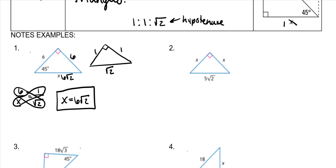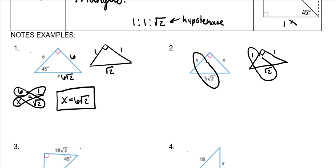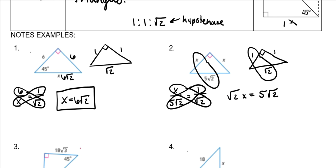45-45-90s are easier, but in a minute we're going to do 30-60-90s, and those are a lot more complicated. So if you're ever in doubt, always set up your formula triangle right next to it and do similar triangles. My hypotenuse is always the square root of 2, and then my legs are always 1. To solve for x, we do x over 5 square roots of 2 equal to 1 over the square root of 2. Cross multiply: the square root of 2 times x equals 5 square roots of 2. These square roots of 2 cancel, and x is just 5.